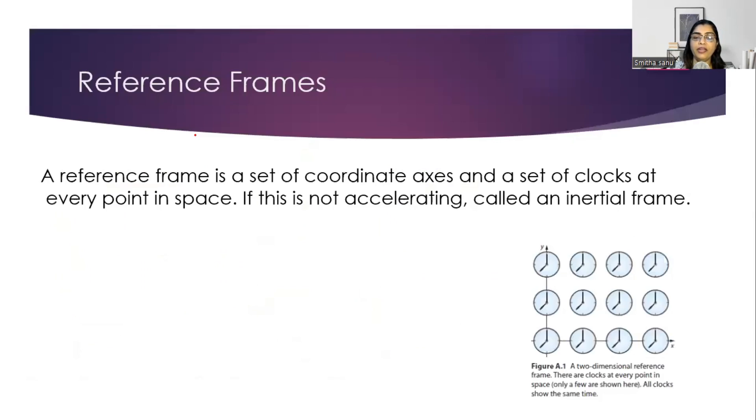Let's define an inertial frame of reference. Inertial frame of reference is a set of coordinate axes with a set of clocks synchronized at every point in that space, which is moving at a constant speed and hence called as inertial frame. So every clock in this frame will measure the same time.